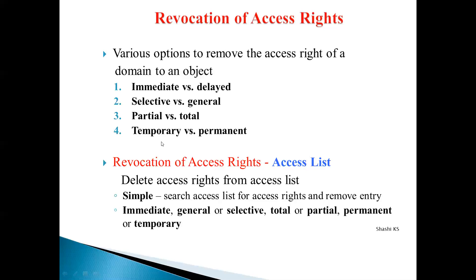All these are the different variations when we revoke access rights of an object in a particular domain for processes trying to access the objects: immediate versus delayed, selective versus general, partial versus total, and temporary versus permanent. Now, we have different types of implementations of access matrix — it can be implemented as an access list or as a capability-based list.